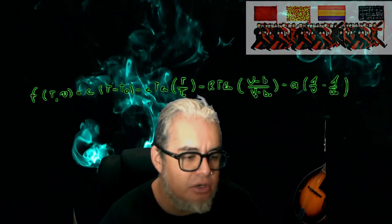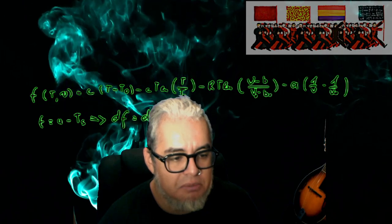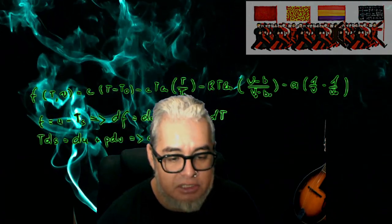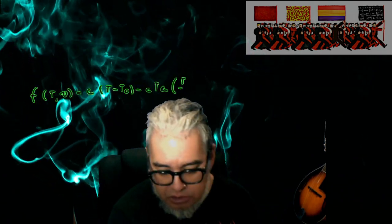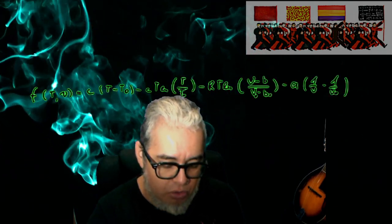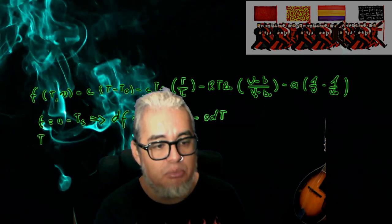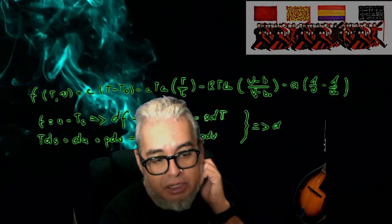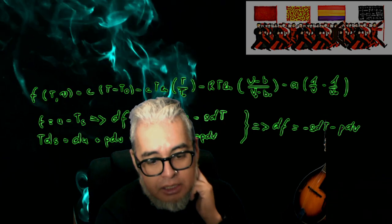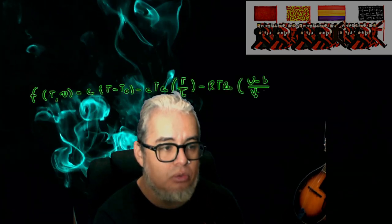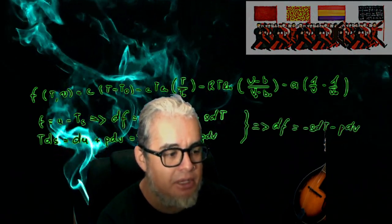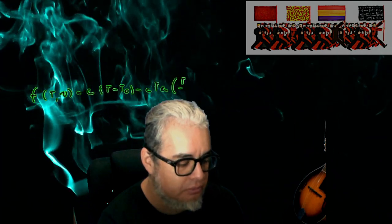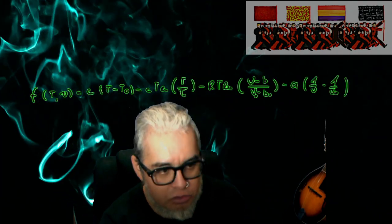¡Hola, qué tal a todos! Bienvenidos a una nueva sesión de este minicurso de inferencia estadística. En esta sesión vamos a seguir platicando un poco de pruebas de hipótesis. Vamos a hablar sobre la función potencia y vamos a hacer un ejemplo utilizando una variable que se distribuye con una Bernoulli para el problema de unos volados.